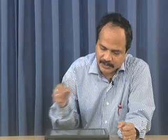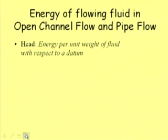So in energy, pressure has something to do. Position or elevation level also has something to do. When water is flowing with high velocity it contains more energy; with low velocity, less energy. We use a term called 'head' — the energy head of flowing fluid in open channel flow and pipe flow. Head refers to energy per unit weight of fluid with respect to a datum.